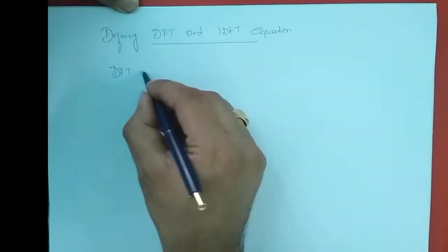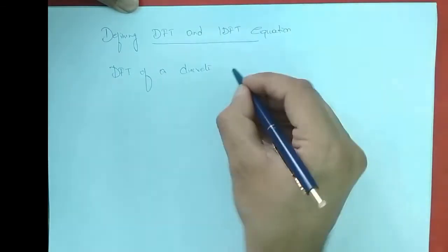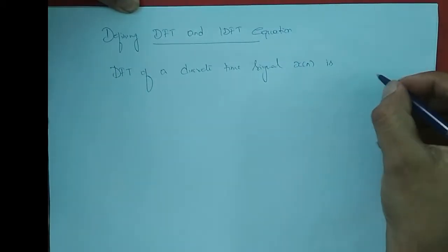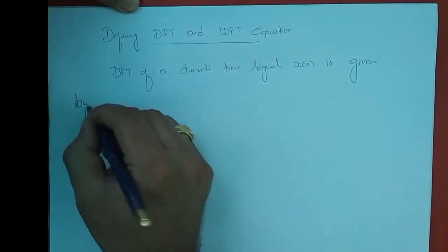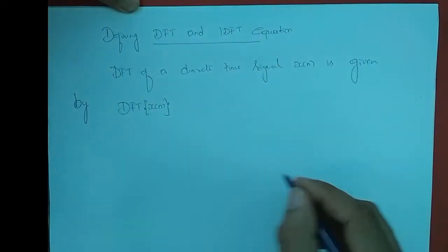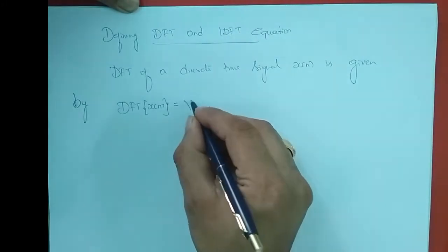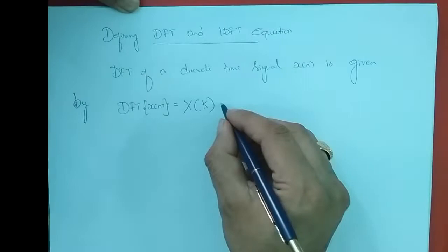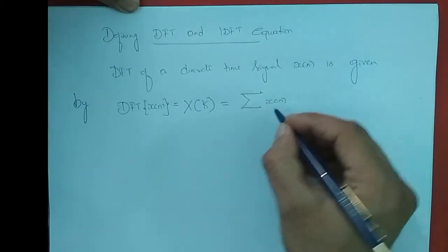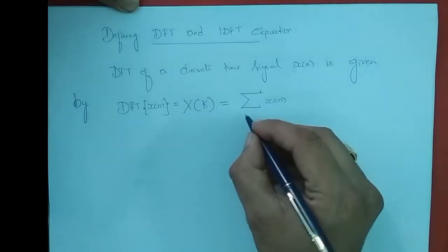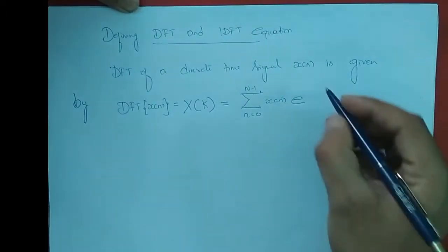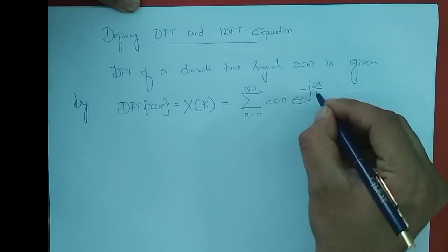So DFT of a discrete time signal x of n is given by: DFT of x of n equals X of k, where capital X of k equals the summation of x of n, with n varying from 0 to N minus 1, times e to the power minus j 2 pi by N into k n.